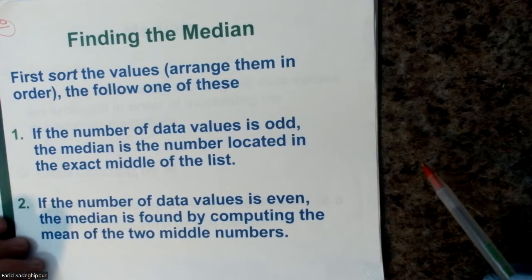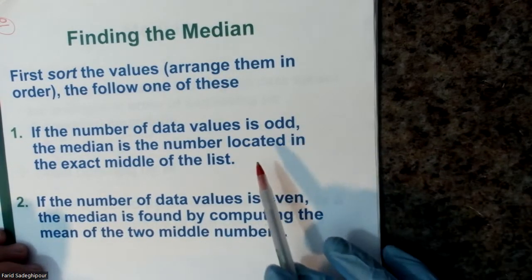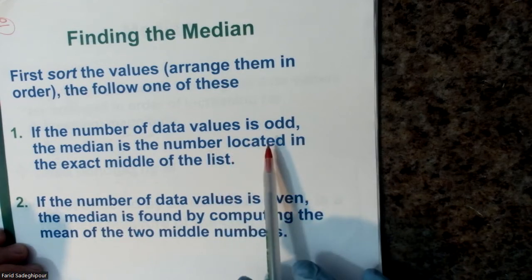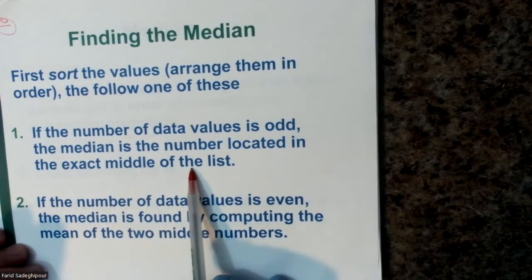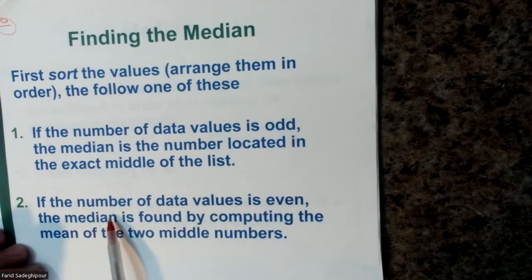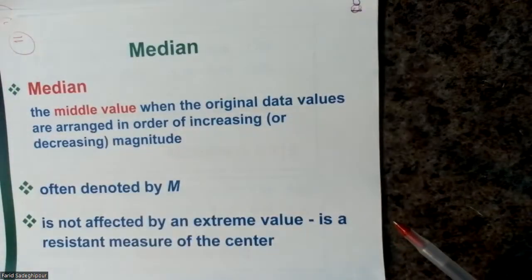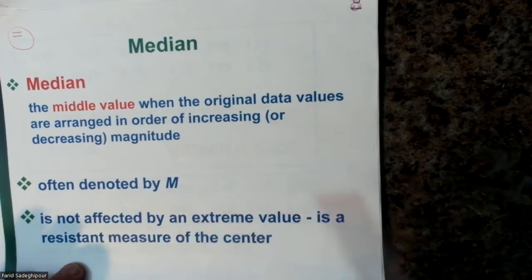Now, how do we find the median? There are two types. If the number of data values is odd, the median is the number located exactly in the middle. If the number of data values is even, the median is found by computing the mean of the two middle numbers. The median can be denoted by M.